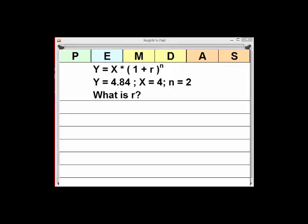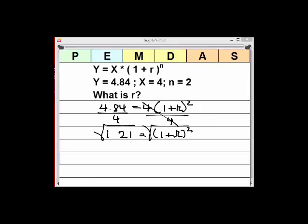The first thing we want to do is substitute what we've got. So we're going to have 4.84 is equal to 4 times 1 plus r squared. Clearly, we can't deal with what's inside the parens because that's where r is. Same reason we can't deal with the exponent. What we can do is divide both sides by 4. It gets rid of that and gives us 1.21 is equal to 1 plus r squared. Take the square root of both sides and we get 1.10 is equal to 1 plus r. r is equal to 0.10.